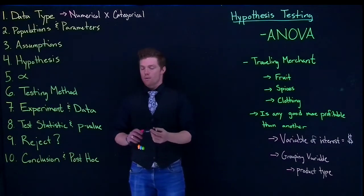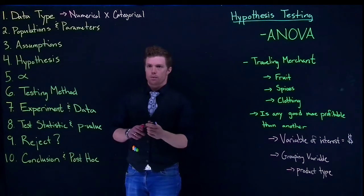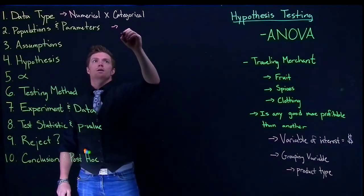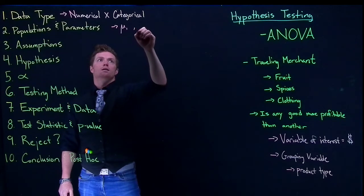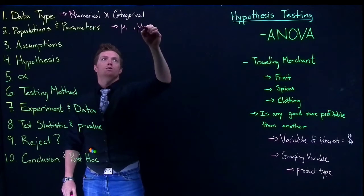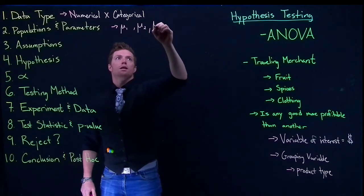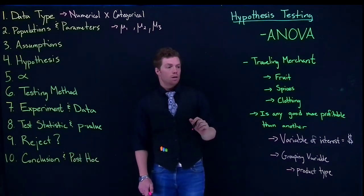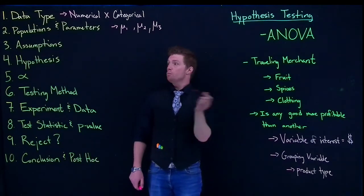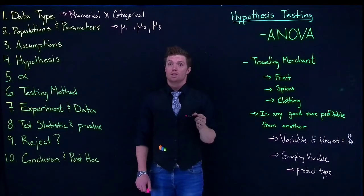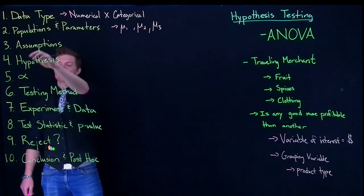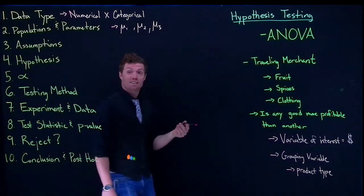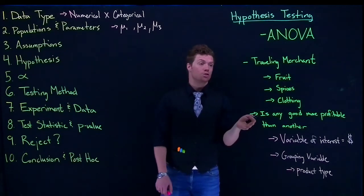So our parameters that we've actually got are mu1, mu2, and mu3. For our assumptions, we need to have some sort of idea that these are going to basically be normally distributed.